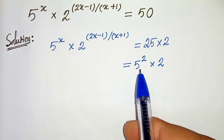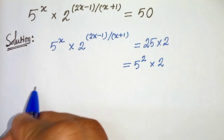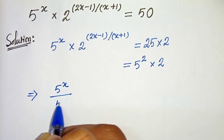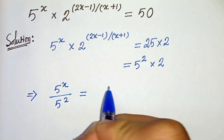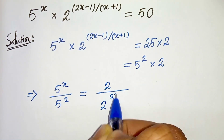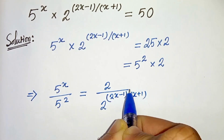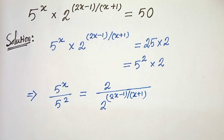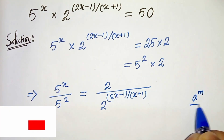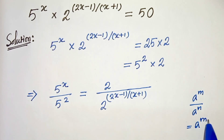Now let's take 5 squared to the left hand side and this term to the right hand side. So in the next step, 5 to the power x divided by 5 squared equals to 2 divided by 2 to the power (2x minus 1) divided by (x plus 1). And we know the exponential property that a to the power m divided by a to the power n can be written as a to the power m minus n.